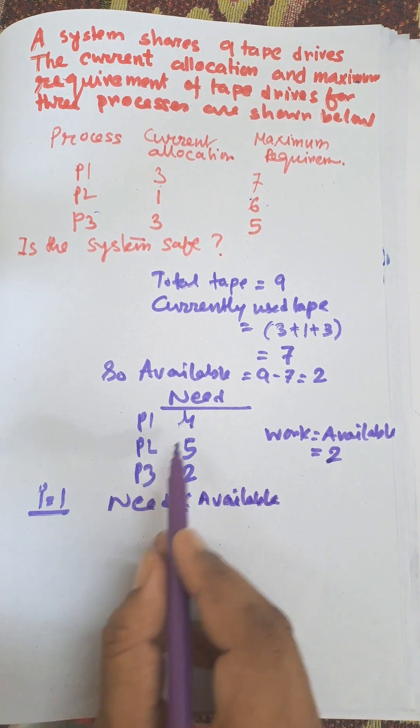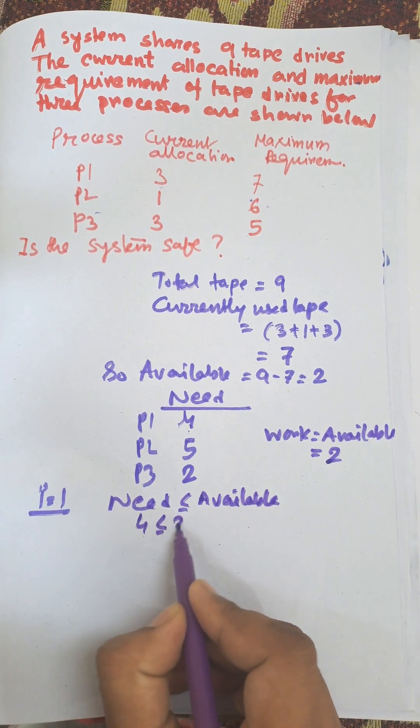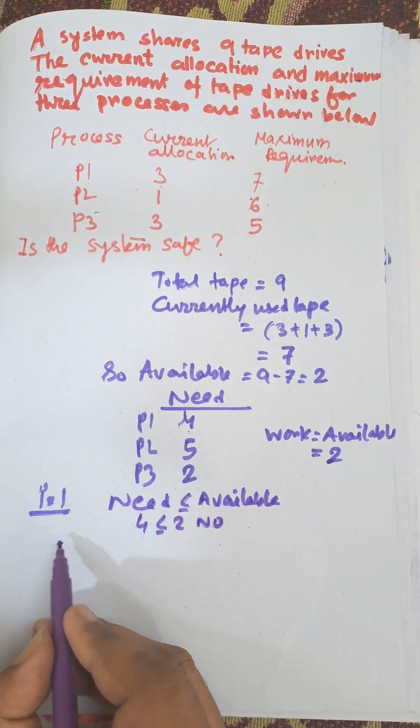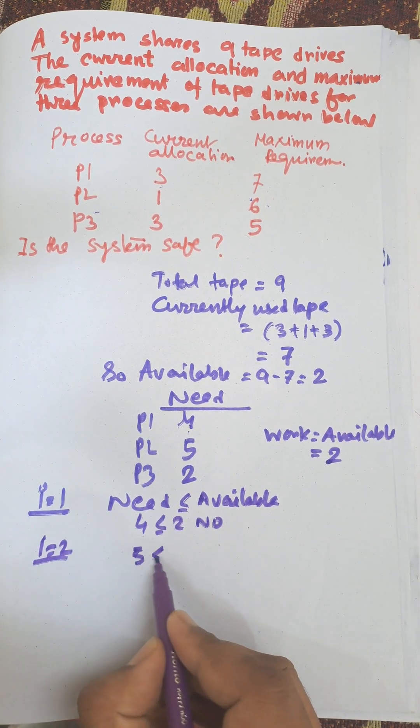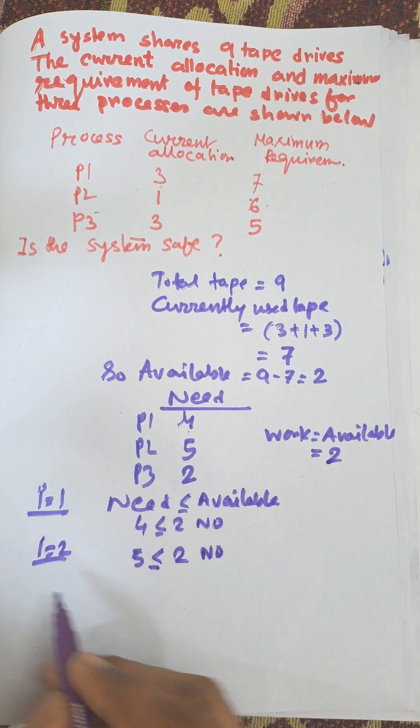Here, need four is less than or equal to available two? No. So we need to check the next one. For i equals two, need five less than or equal to available two? No.